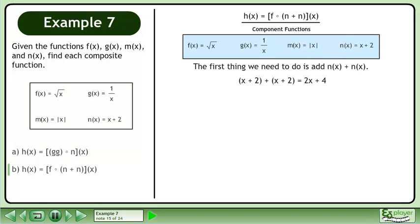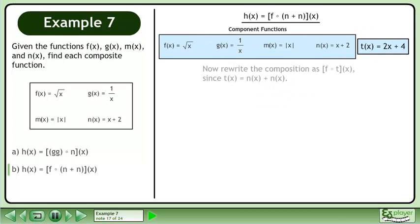The first thing we need to do is add n plus n. This gives us x plus 2 plus x plus 2 equals 2x plus 4. Let's assign 2x plus 4 to the function t. Now rewrite the composition as f since t equals n plus n.